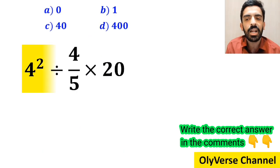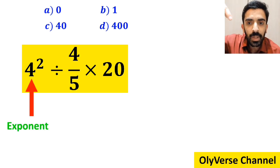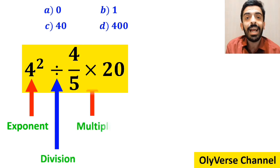Now let's go step by step together and I will show you how we should solve this expression properly. As you can see on the screen, in this expression first we have an exponent, then a division sign, and finally a multiplication.